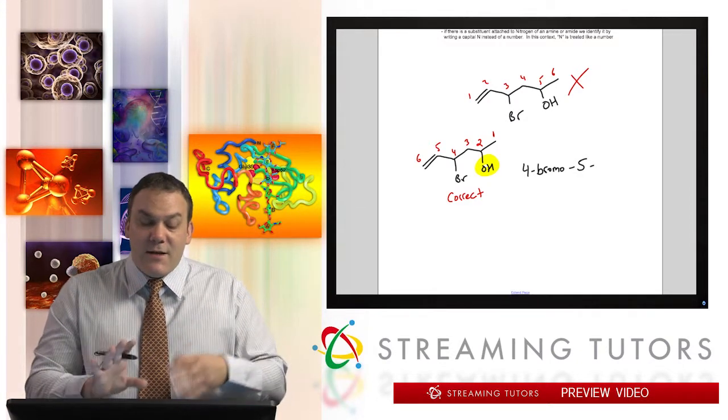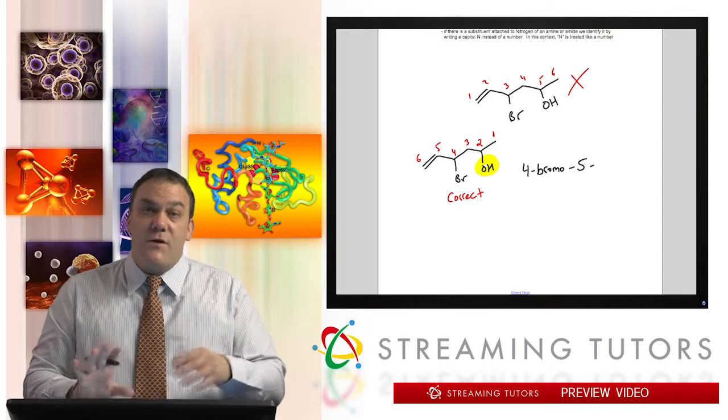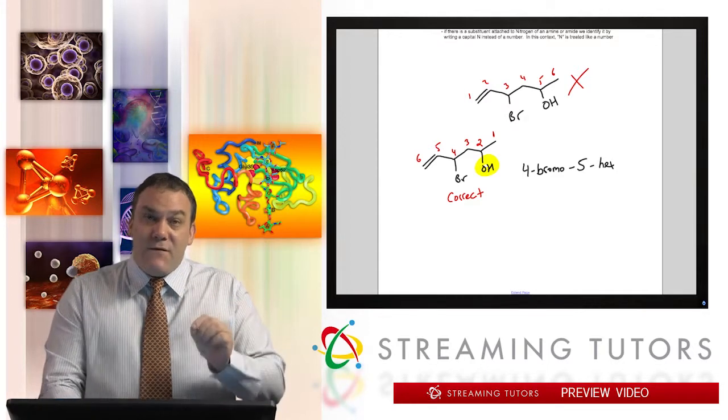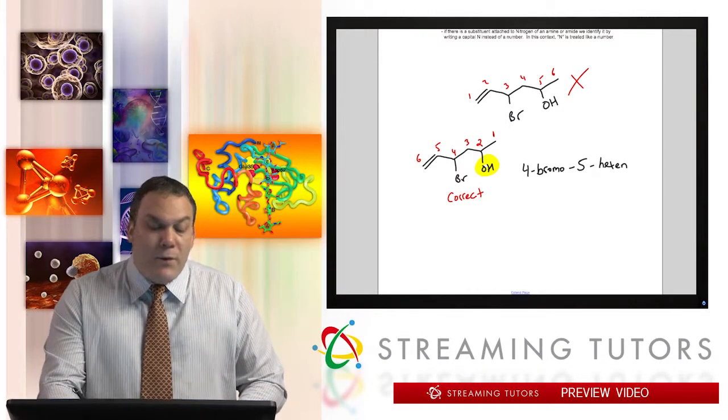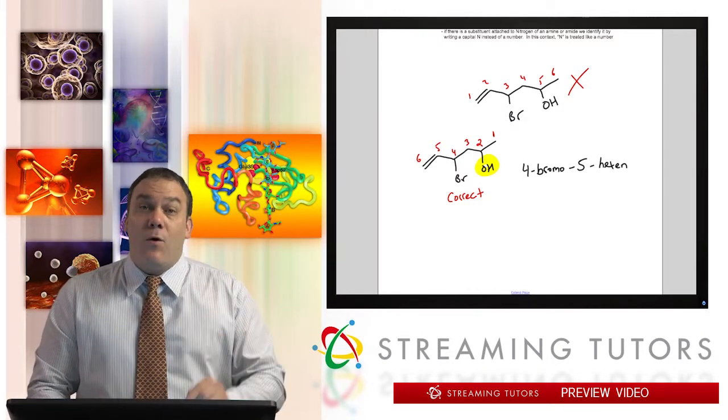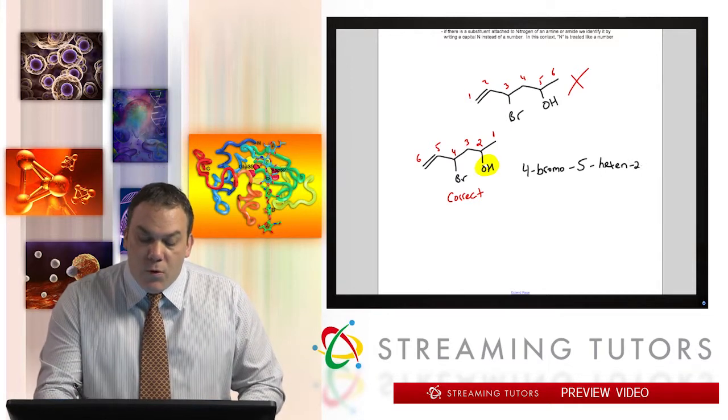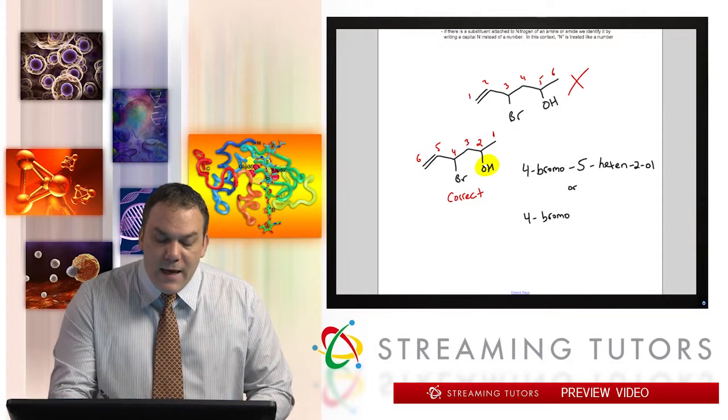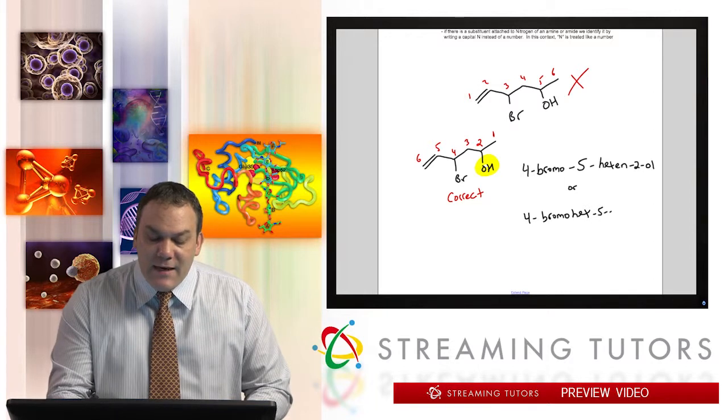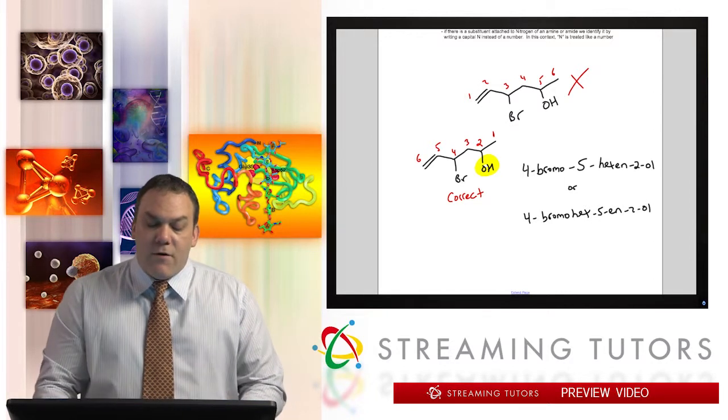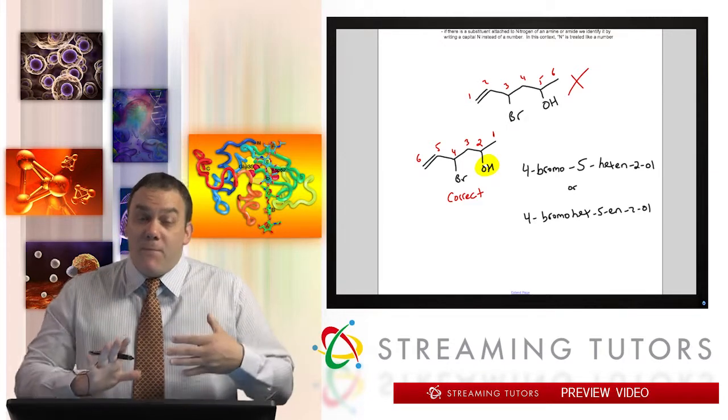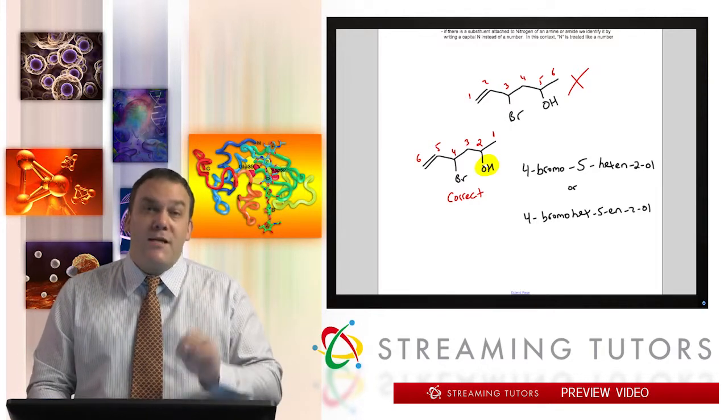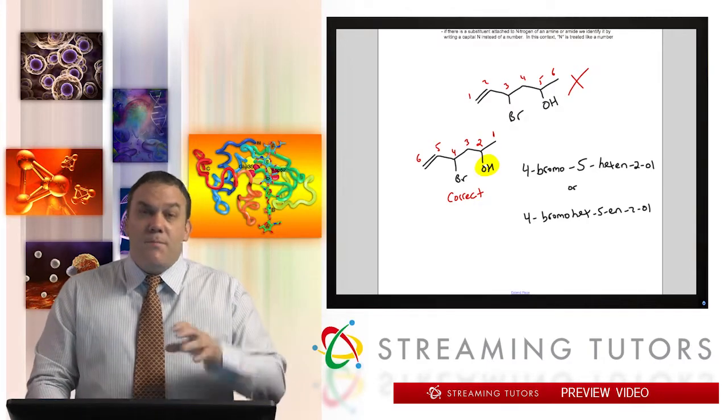Five. And then now finally the parent. So we're about to reference the prefix first, so the prefix then the infix. So we have a hex. 5-hex. And then the infix is 'en,' E-N. And then 'ol.' But we can't just write 'ol,' we have to say where is the alcohol. So 2-ol. And that is correct. We could have also - I'll write 'or' - we could write 4-bromo-hex-5-en-2-ol. And that is correct as well. So do you put the number 5 before the parent name begins, or do you put it right next to the 'en'? It's up to you how you do it. They're both correct, they're both acceptable. And that's it. So this is basically how it works.